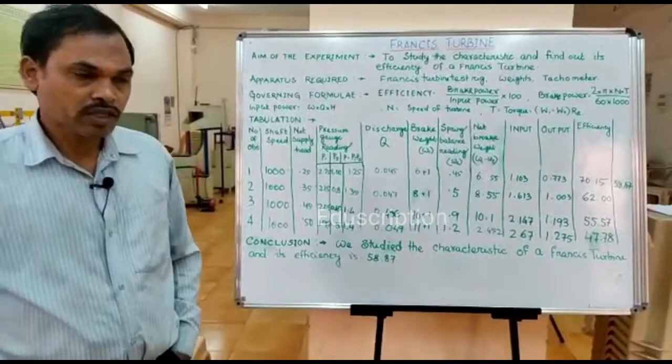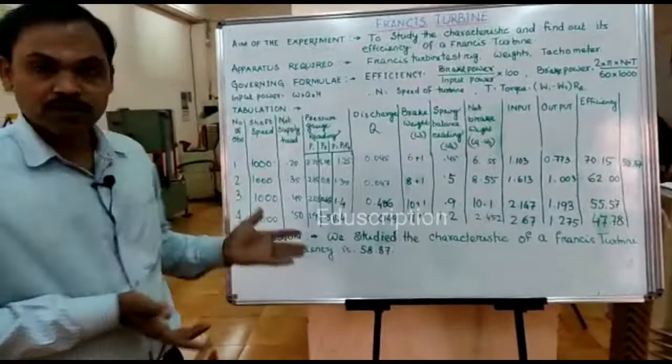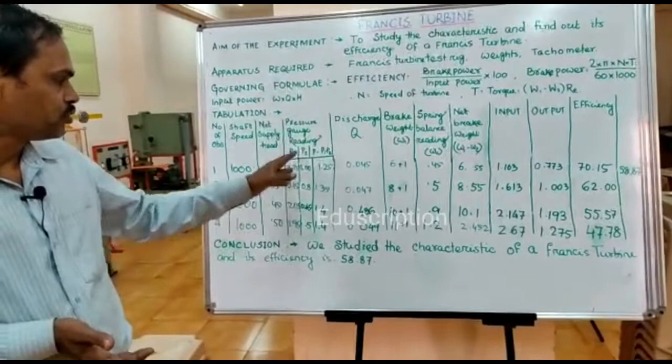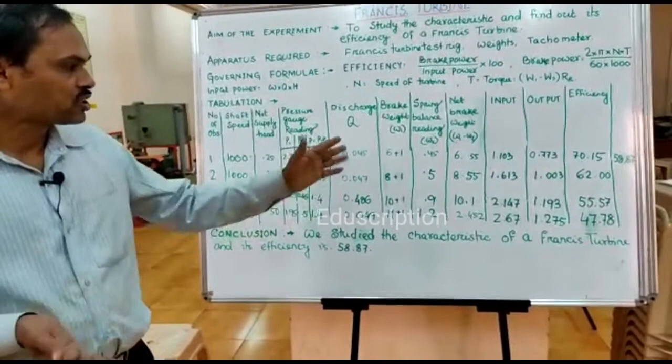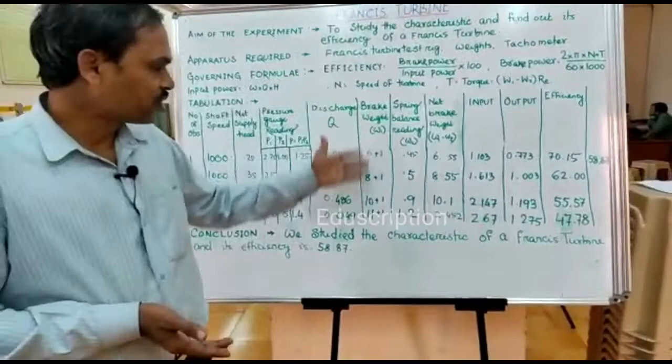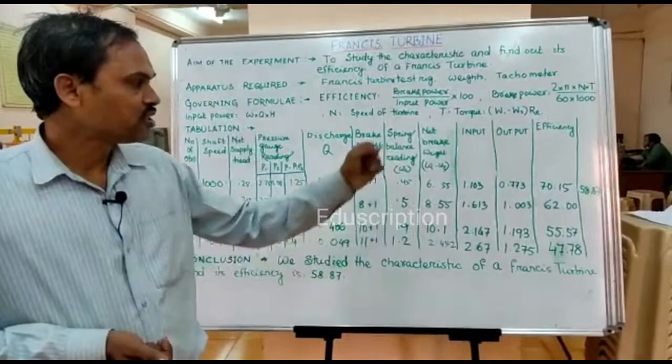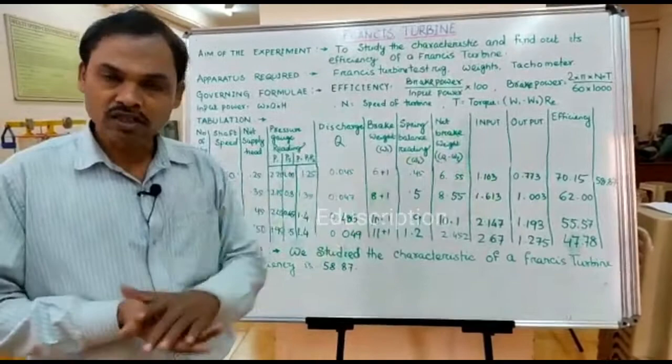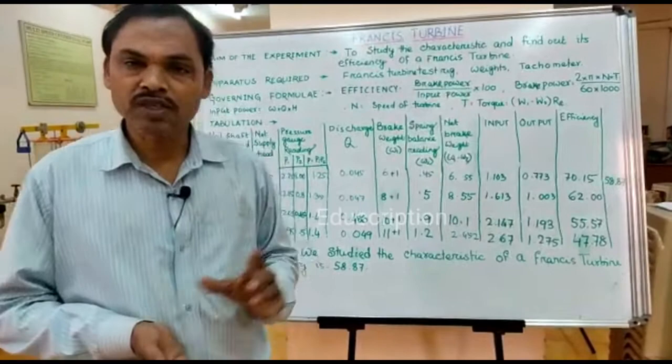Next we move to the tabulation part. We are taking 4 observations recording P1 and P2, inlet pressure and throat pressure, discharge, the brake weights, and spring balance readings, finally computing input power, output power, and efficiency. In the conclusion part, we studied the different parts and functions of the Francis turbine and found its efficiency to be 58.87 percent.